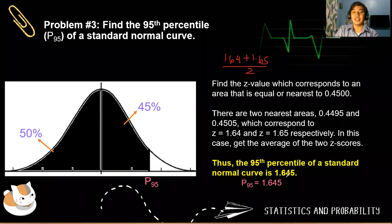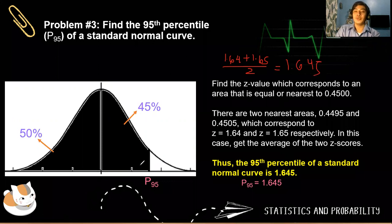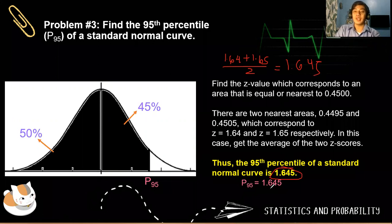The final answer will be 1.645, which is the average of the two Z-scores. Therefore, the Z-score represented by the 95th percentile is 1.645.